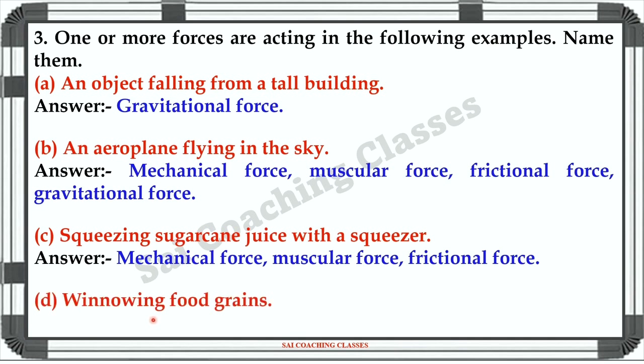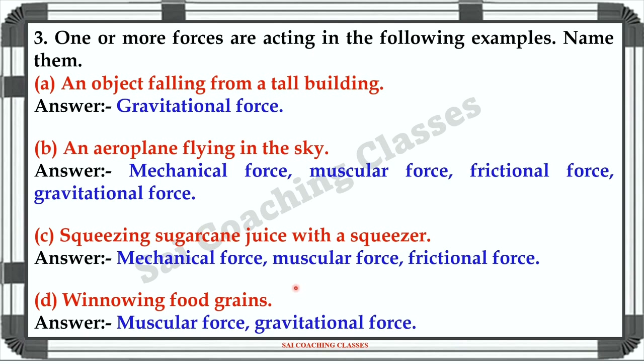D — Winnowing food grains. Answer: Muscular force and gravitational force.